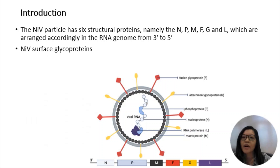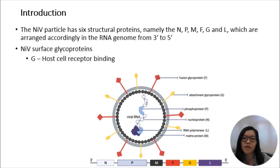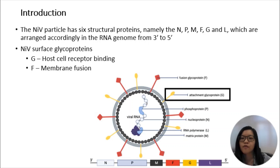The Nipah virus particle has six structural proteins, namely N, P, M, F, G, and L. There are two distinct Nipah virus surface glycoproteins that play an essential role in the entry of the virus into host cells. The G-protein is responsible for host cell receptor binding, whereas the F-protein mediates the membrane fusion between the virus and the host cells.